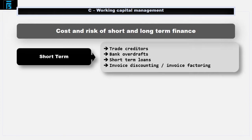Other short-term finance sources include bank overdrafts and short-term loans. Also, invoice discounting or invoice factoring, where an organisation can sell its accounts receivable to an invoice financing company for cash. They sell the invoices for less than the face value, and the difference is the financing company's fee. This is a good source of short-term finance as it doesn't affect the company's gearing levels, and customers are unaware that their bill has been factored. The organisation can also reduce their risk of bad debt depending on the agreement with the factoring company. However, if the organisation has tight profit margins, the factoring cost may be too high.